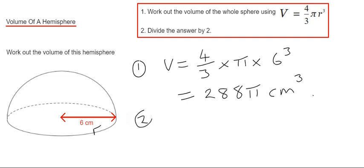And then we just need to divide this by two, because a hemisphere is half the volume of the full sphere. So we've got to do two hundred and eighty eight pi divided by two. That will give us one hundred and forty four pi.